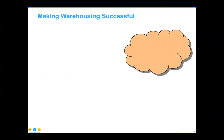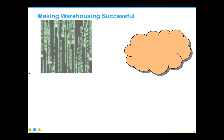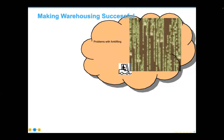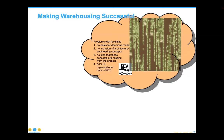The original example here was warehousing, but it's exactly the same economics that go into the cloud, because most people just take their data and move it into the cloud without transformation. The problem with lifting your data in this fashion is there's no basis for making decisions around architecture and engineering concepts. This is even scarier when you consider that 80% of your organizational data is ROT — an acronym that stands for data that is redundant, obsolete, or trivial.